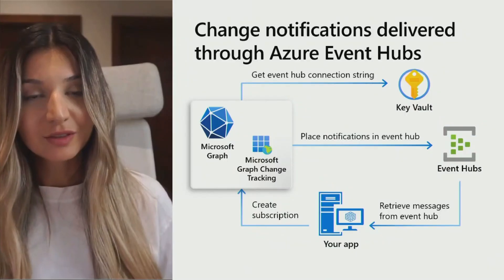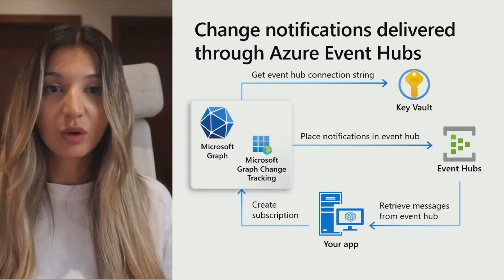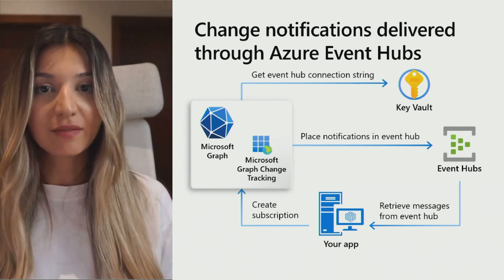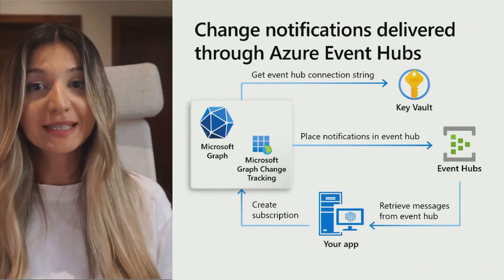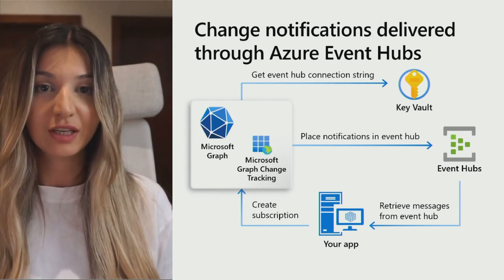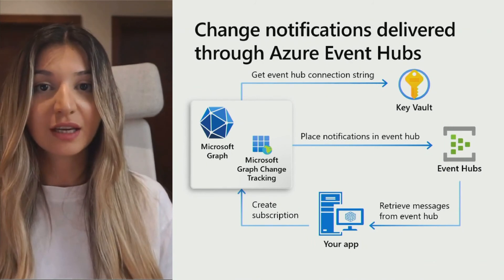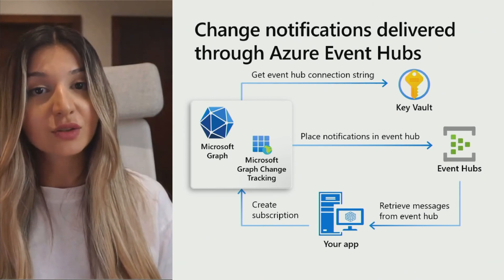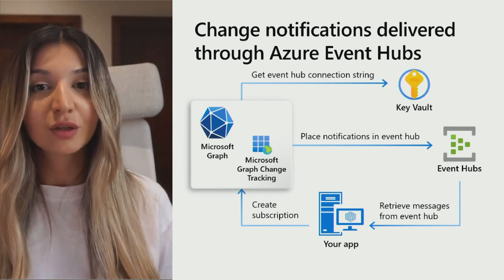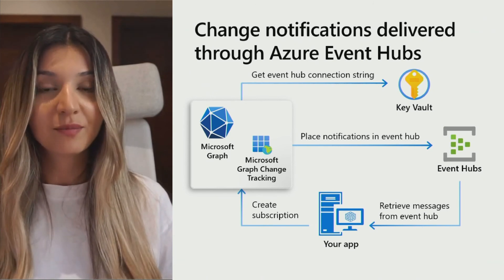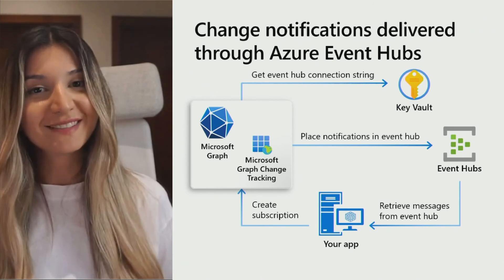So this is another way of using change notifications with the configuration of Azure Event Hubs. Basically, what we did in this demo is we created a subscription by using an Event Hub connection string through Azure Key Vault, then Event Hub started listening for change notifications. Finally, our app received Microsoft Graph change notifications through Event Hub. That's all we did.